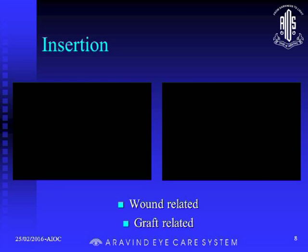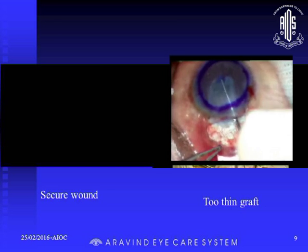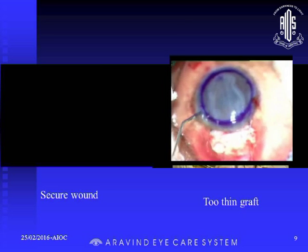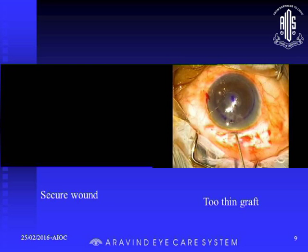Even in a thin graft, if you are using an anterior chamber maintainer, better to close it at the time of insertion before you secure the wound — don't open it up, otherwise the graft can get expelled. Better in such cases to suture the wound first and then go ahead with re-inflating the chamber. A thin graft sometimes can behave like a PDEK or DMEK — very difficult to insert, keep in place, or even unfold. Keep the anterior chamber low and try to tap and open it as in DMEK, then place it in position. Even after everything goes well, if your side port entry is too anterior, you can still end up with a problem.